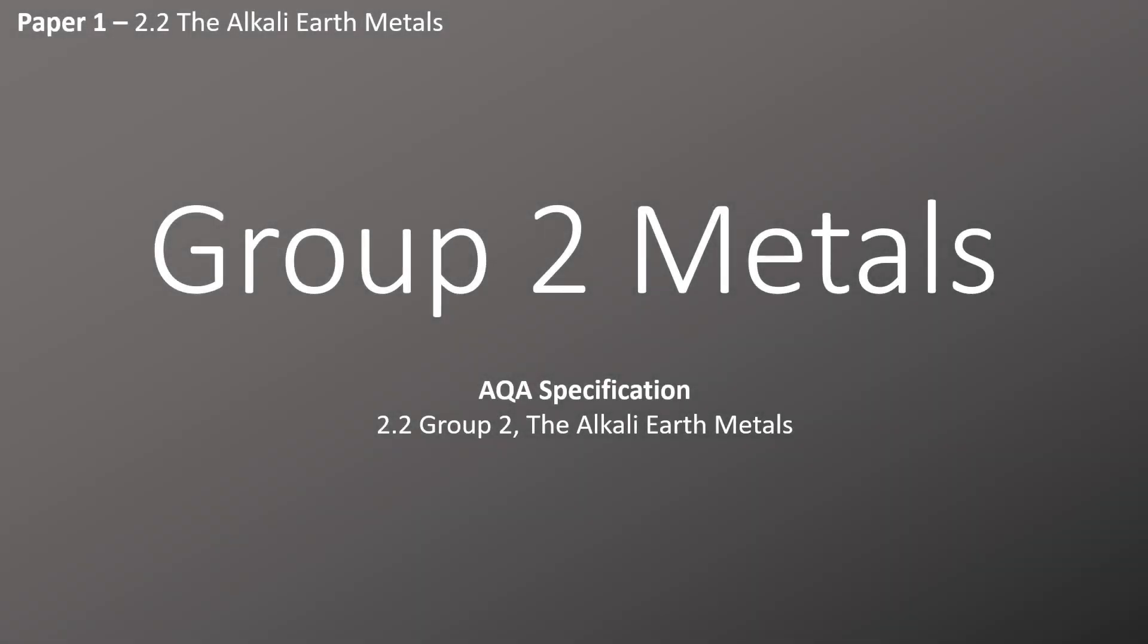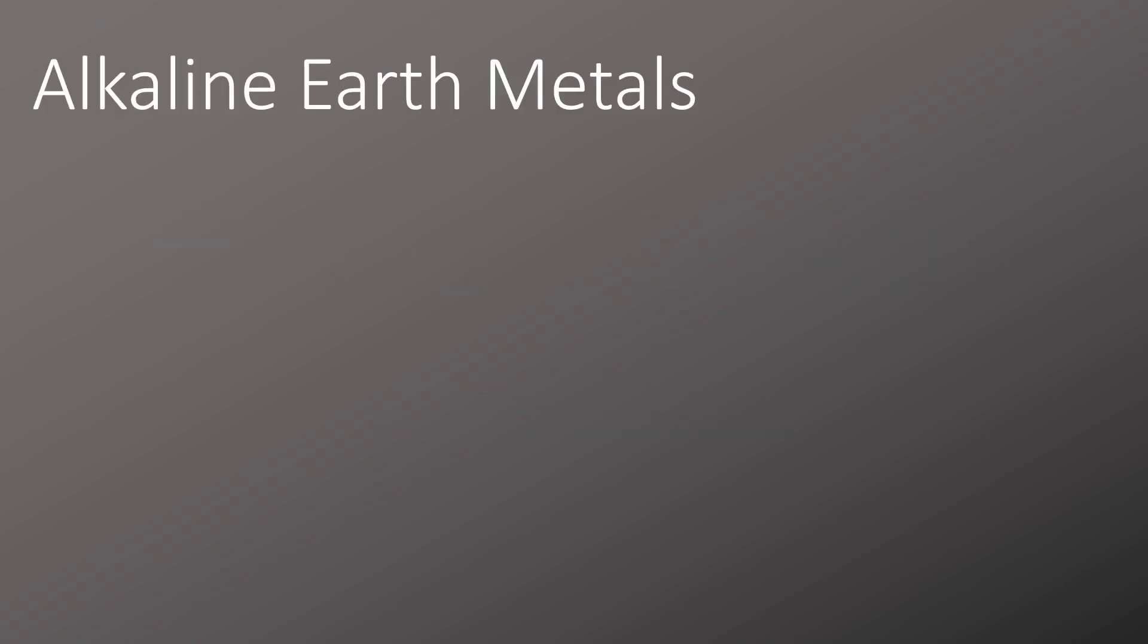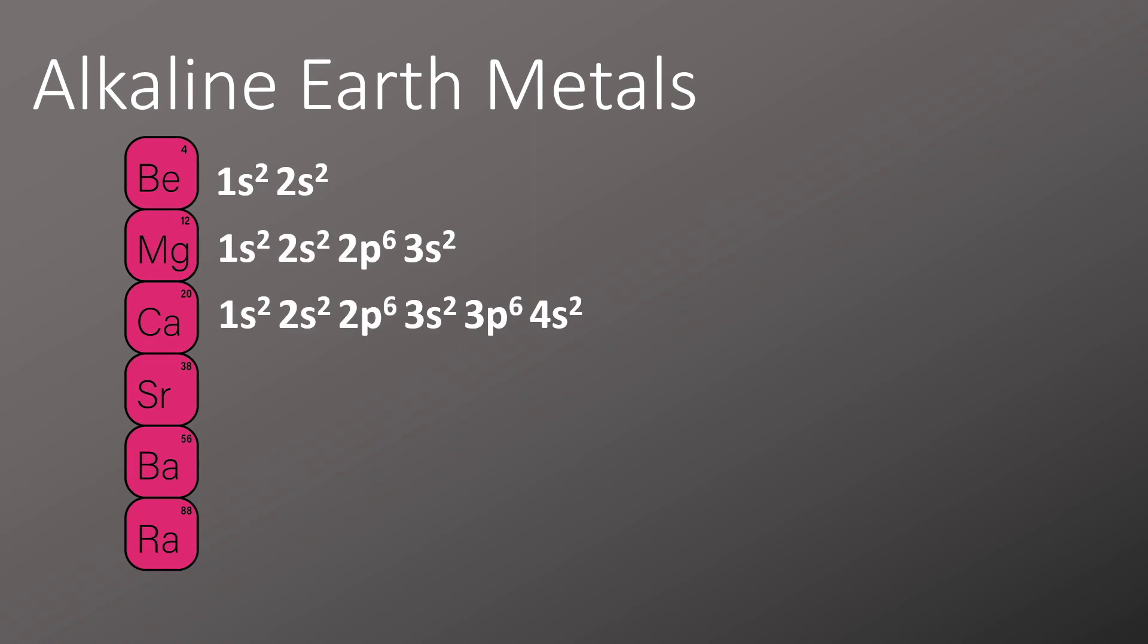Group 2 metals - that's AQA specification 2.2, the alkaline earth metals, paper one for A-level chemistry. The alkaline earth metals are beryllium, magnesium, calcium, strontium, barium, and radium, and we have the electron configurations for the first three here.